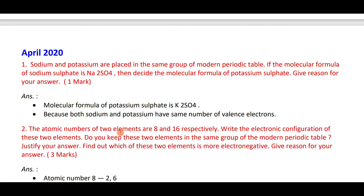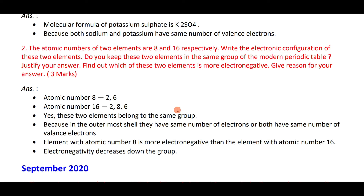Sodium and potassium are in the same group of the modern periodic table. If the molecular formula of sodium sulfate is Na₂SO₄, then potassium sulfate is K₂SO₄ — because sodium and potassium have the same number of valence electrons. Elements with atomic numbers 8 and 16 have configurations 2,6 and 2,8,6 respectively — they are in the same group because both have the same number of valence electrons. Element with atomic number 8 is more electronegative because electronegativity decreases down the group.